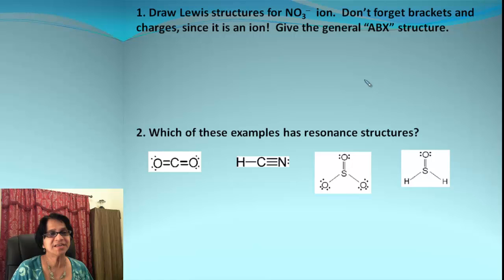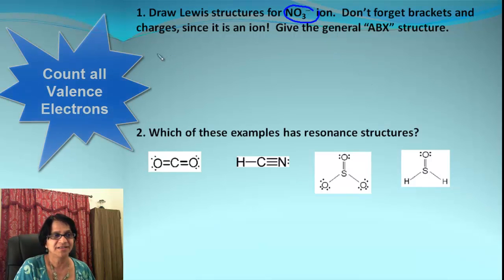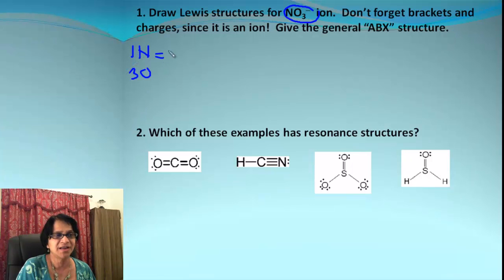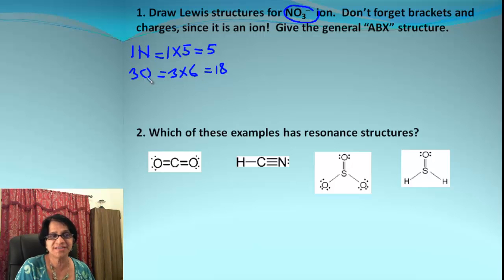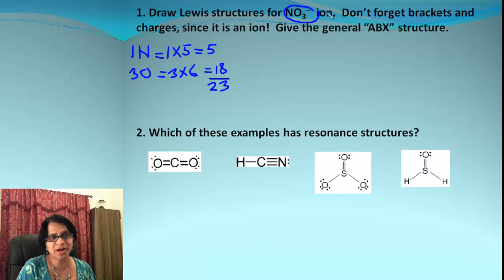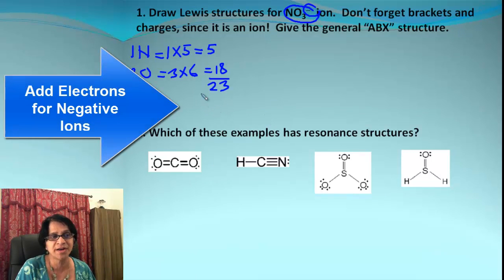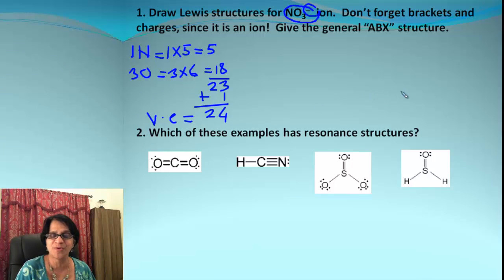So let's actually draw a resonating structure for the nitrate ion. Let's take the electron count first. We have one nitrogen and three oxygens. That means we'll have five valence electrons from nitrogen, being from group 15, and we will have three times six — 18 electrons — from oxygen. The six electrons come because oxygen is in group 16. When we add both of those we get 23 valence electrons. But there is a negative one charge, which means it has one extra electron. So we have 24 valence electrons available for nitrate ion.